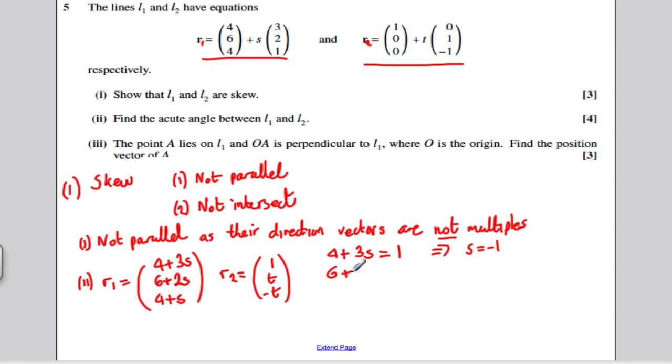R2 is 1 plus no T, so it is just 1, 0 plus 1T is just T, and 0 minus T. We have got to show they do not intersect. Let us try and make them intersect and show that this is not consistent. If they were to intersect, then I would equal that I. So you would get 4 plus 3S is equal to 1, which tells us that S would have to be minus 1.